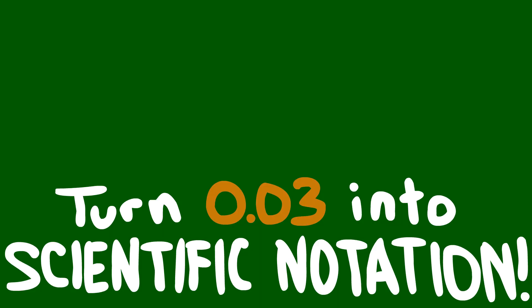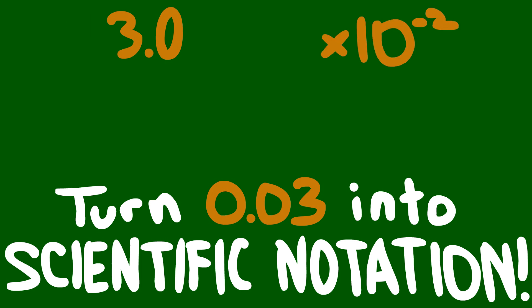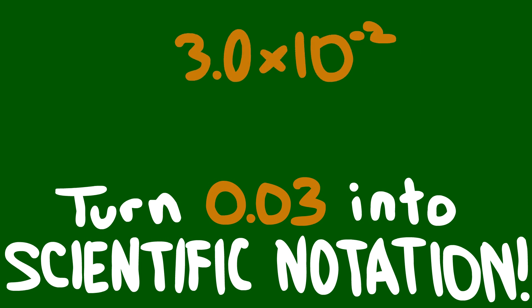Express your number so that it's more than one but less than ten. Take that number and multiply it by ten to the proper exponent. Point zero three in scientific notation is three times ten to the negative two.